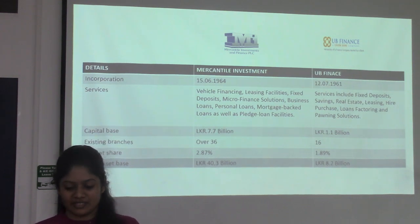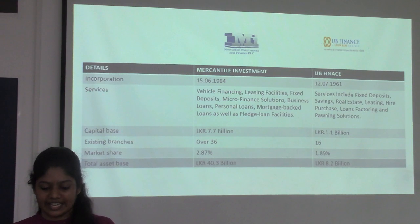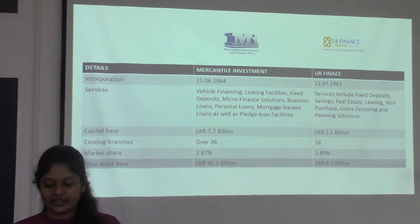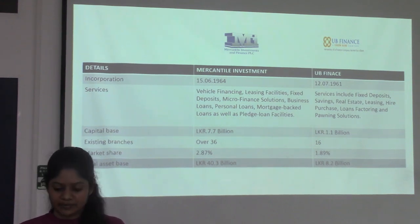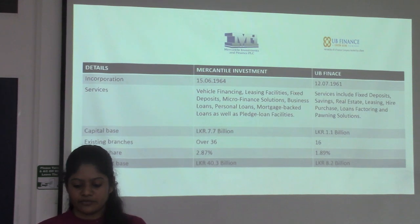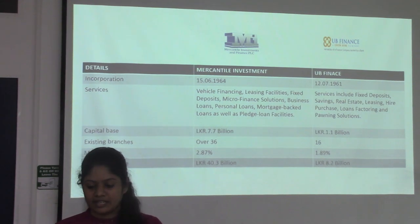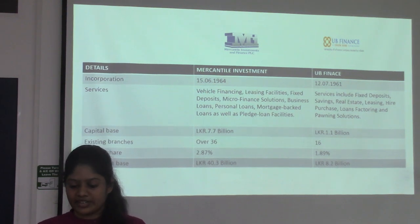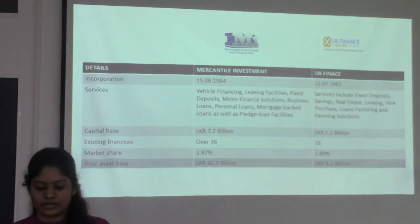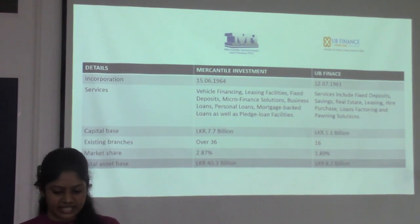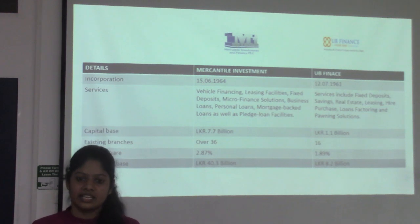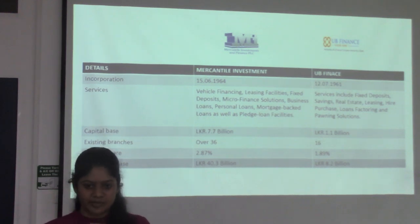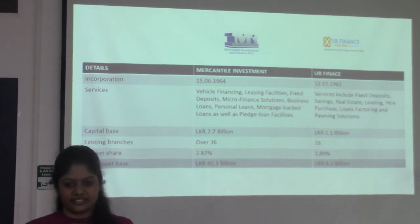In market share, Mercantile Investment has 2.87% and UB Finance has 1.89%. With total asset base, Mercantile Investment has around 40.3 billion, whereas UB Finance has around 8.2 billion. So when comparing both companies, Mercantile Investment plays a better role in the industry.